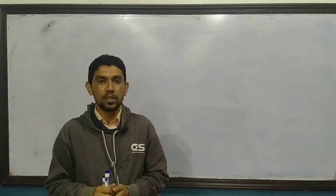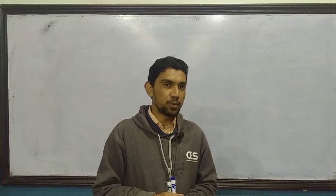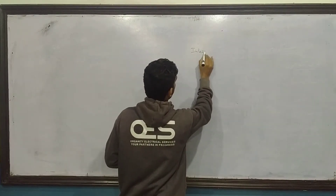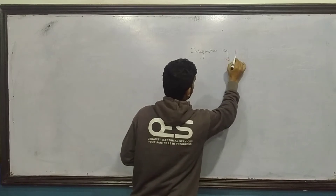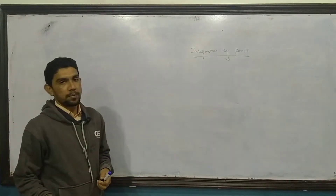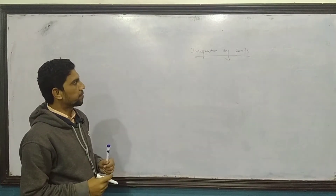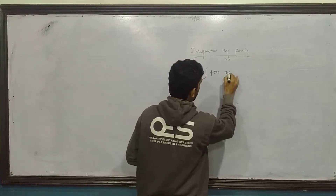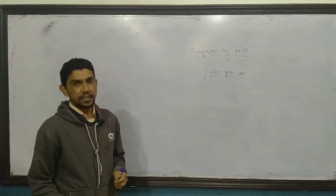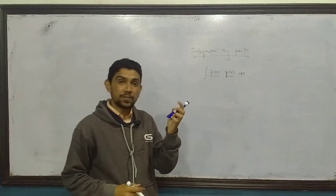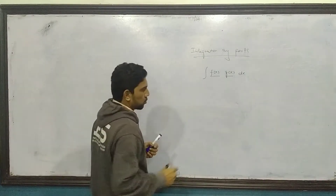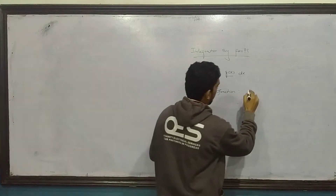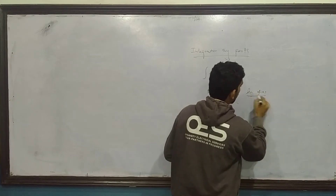Assalamu alaikum, aaj humein padhni hai 3.4 integration ki sabse important exercise hai, 3.4 mein integration by parts. Ismein aapne sabse pehle yeh dekhna hai ki do functions honge, do parts honge - f of x aur g of x. Yeh koi do functions aapko diye gaye hain jinhe aap integrate karenge.